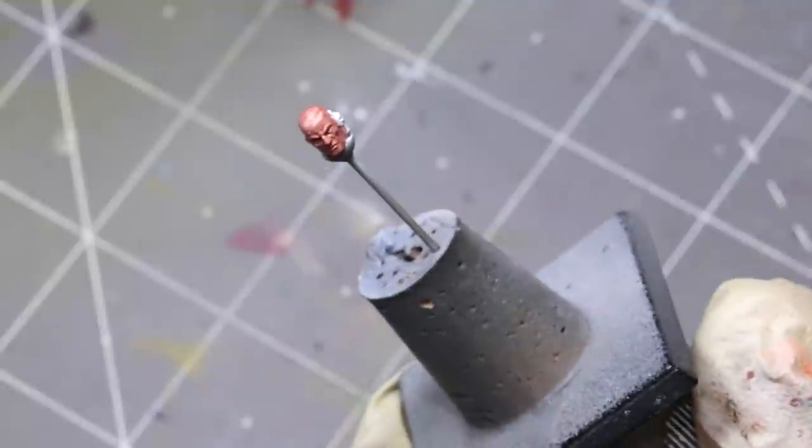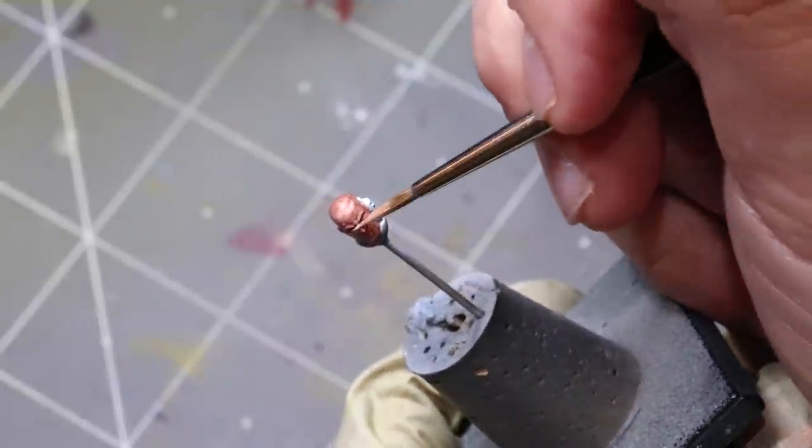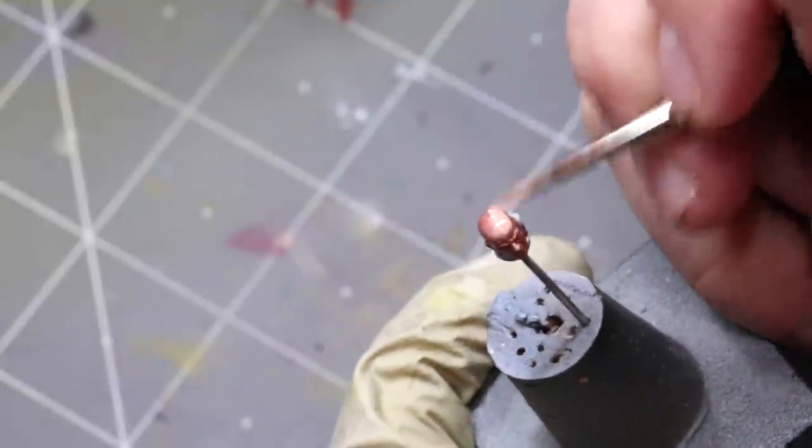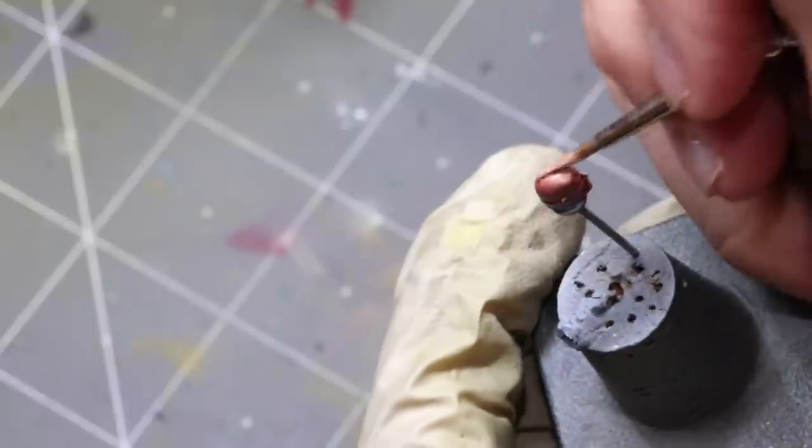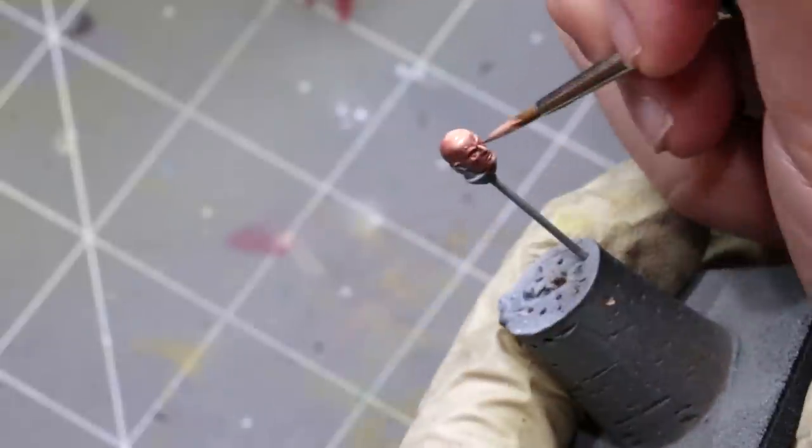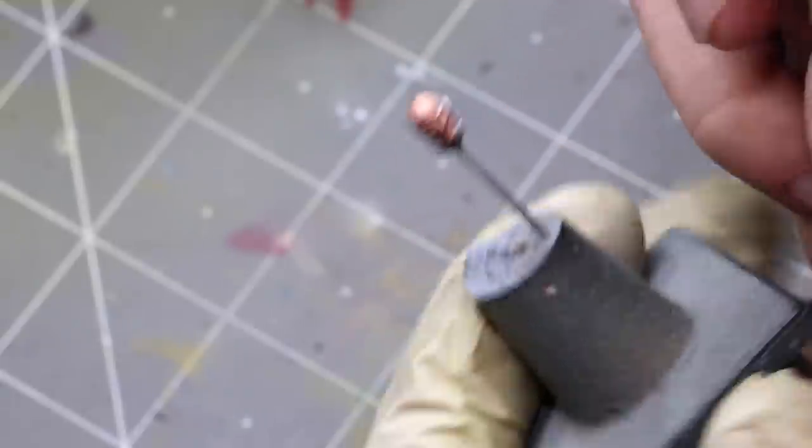We're starting out here, I just did a nice thin coat of Bugman's glow over the whole thing and you notice it was pretty splotchy and that doesn't really matter. We're not too concerned because we're going to put so much additional paint over all this. It's just adding some slight base tone and every single part of this will be touched again.